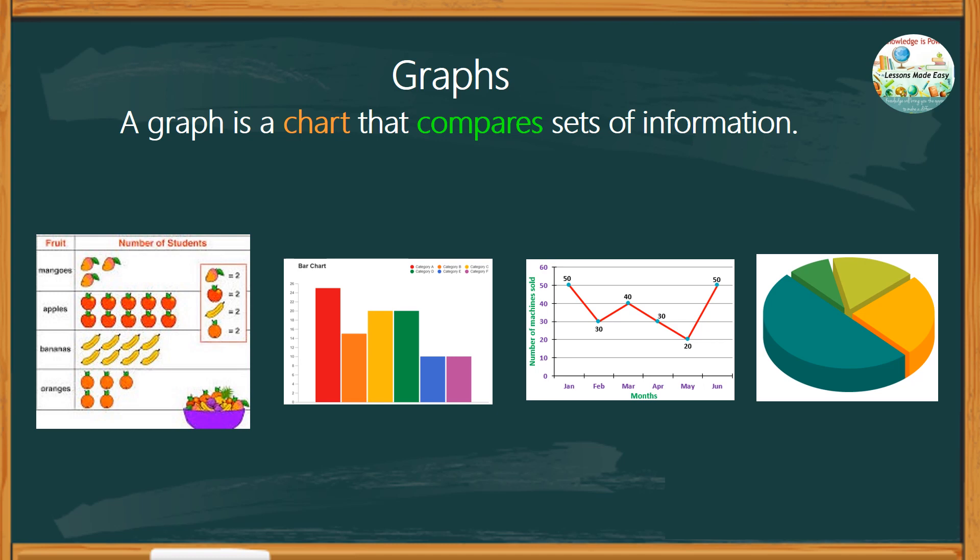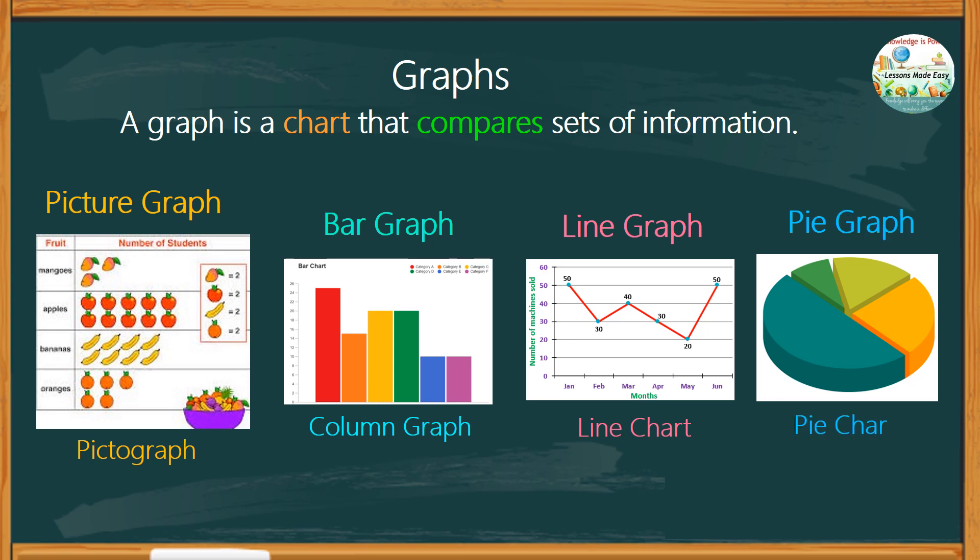Different types of graphs can be used for various sets of data. We have the picture graph, also known as the pictograph, the bar graph known as the column graph, the line graph or the line chart, and the pie graph commonly known as the pie chart.